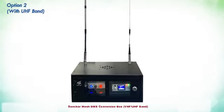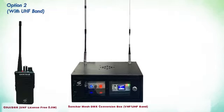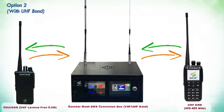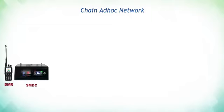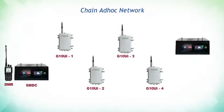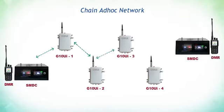Option two with UHF band: the G5 UI DRR UHF license-free radio communicates with a UHF DMR radio through the Sanchar DMR conversion box. Long-distance DMR communication can be established using a chain ad-hoc network through the G10.